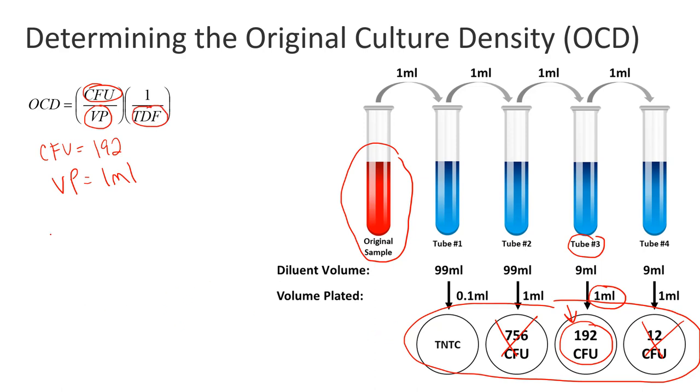The total dilution factor, or TDF. In a previous video I went over how to determine the TDF from a serial dilution. Let's do it quickly here. We have 1 ml into 99, so that's a 1 to 100 dilution. 1 to 100 from the original sample to tube 1 is the same as 10 to the minus 2.